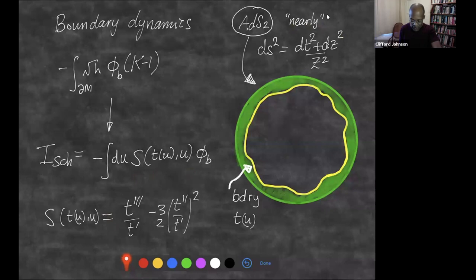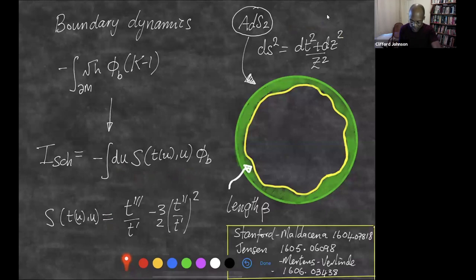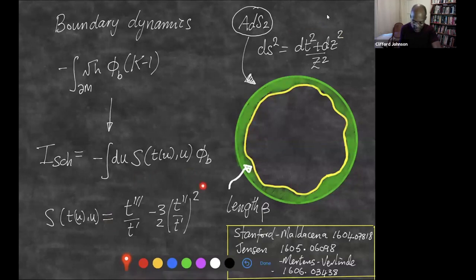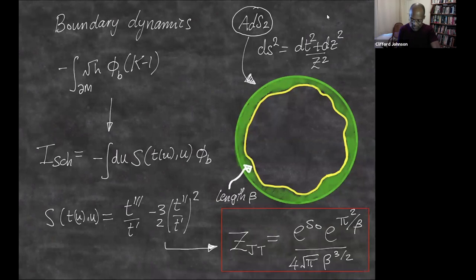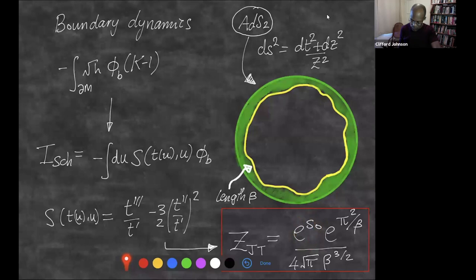There's Schwarzian dynamics on the boundary. There's a boundary coordinate u and an action that looks like this, where u-prime is a u-derivative. If you parameterize the boundary at fixed length beta but otherwise allow it to wiggle according to the Schwarzian dynamics, you get this result in some normalization for the leading disk geometry part of the partition function. The e^{S_0} simply comes from the form of the action I wrote previously, and then there's some nice beta-dependence.